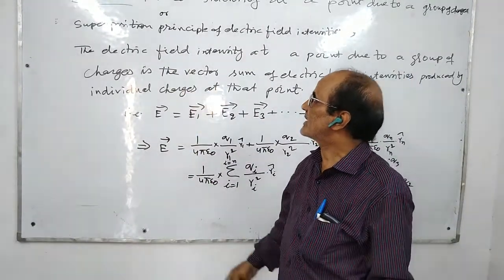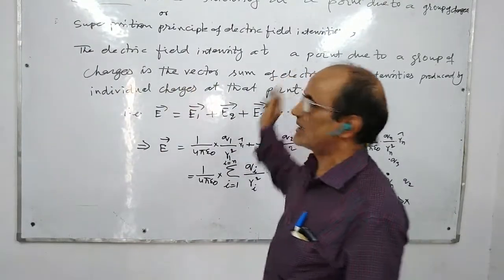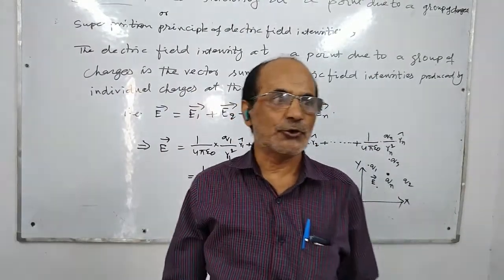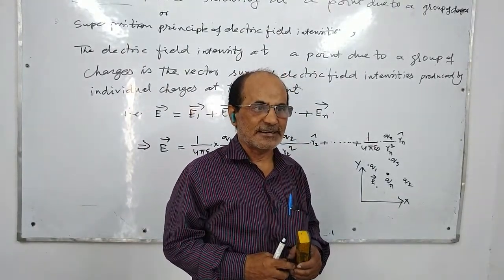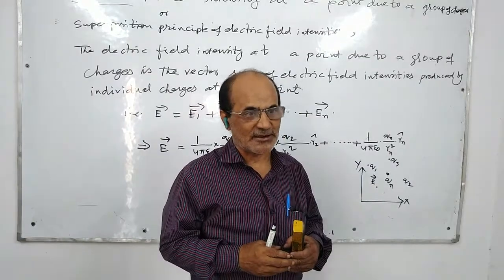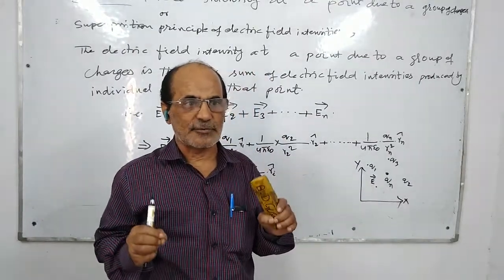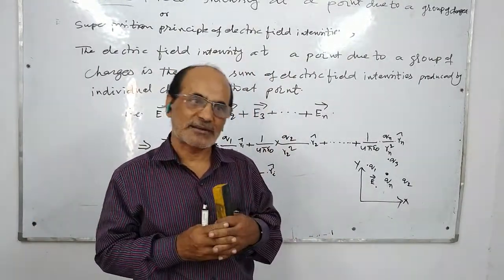The electric field intensity at a point due to a group of charges is the vector sum of electric field intensity produced by individual charges. So, the electric field intensity for these charges, it is the vector sum.